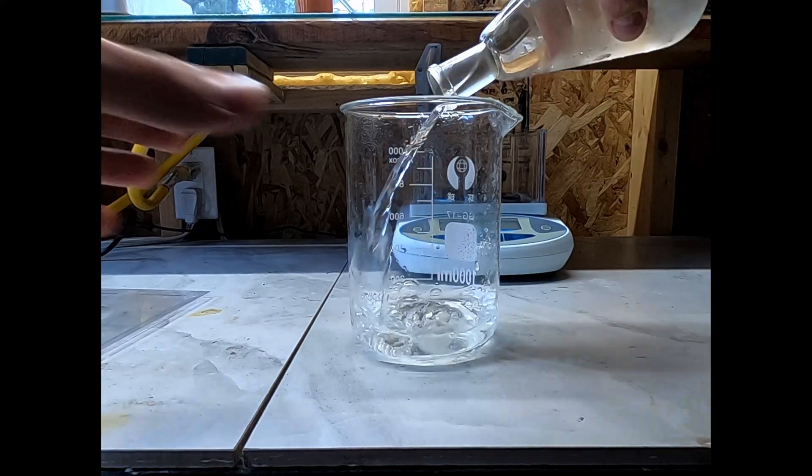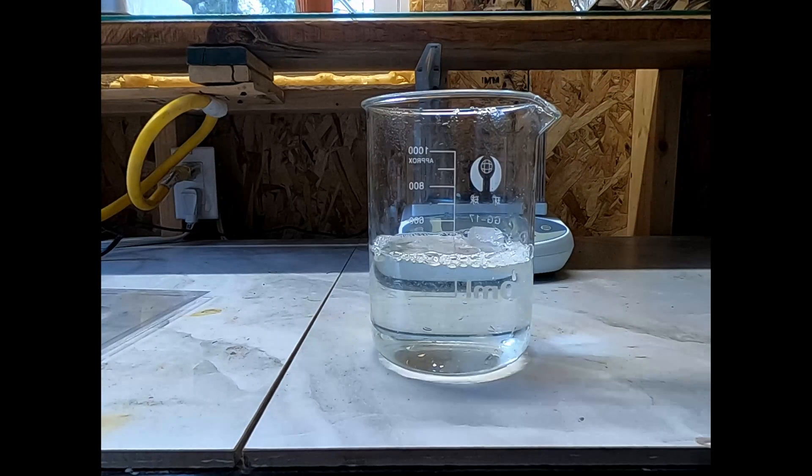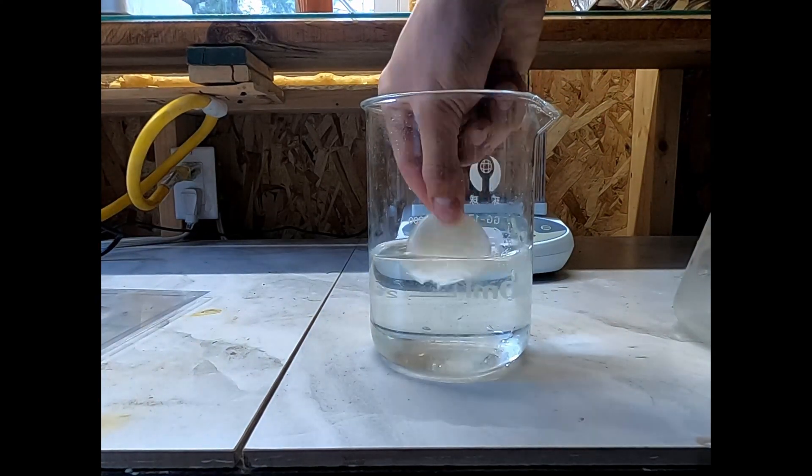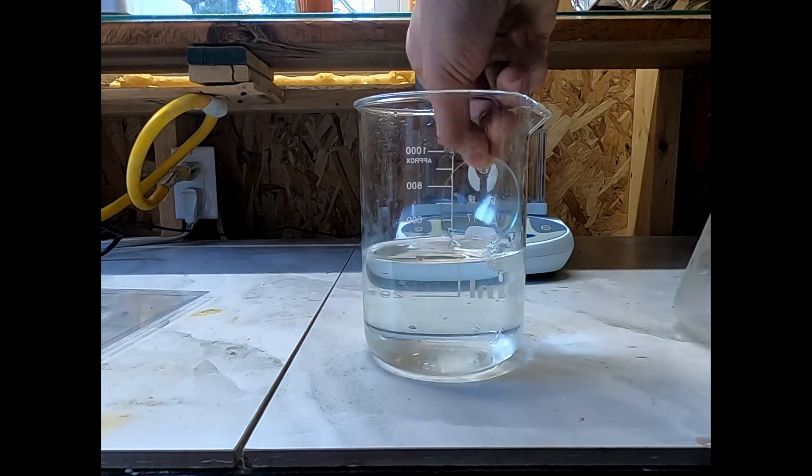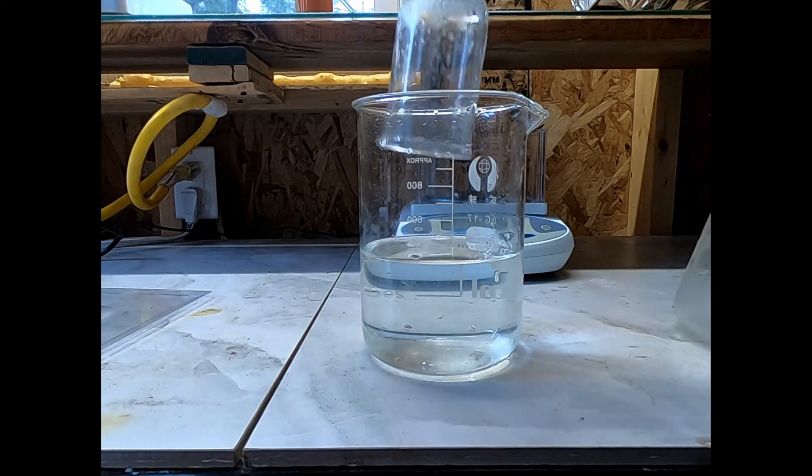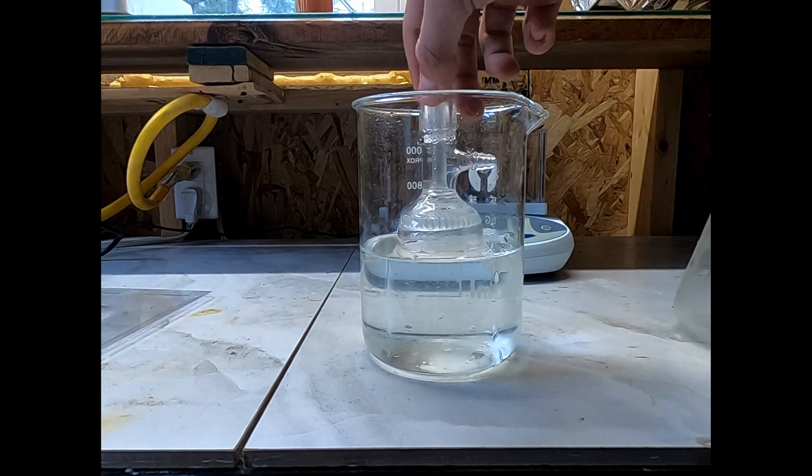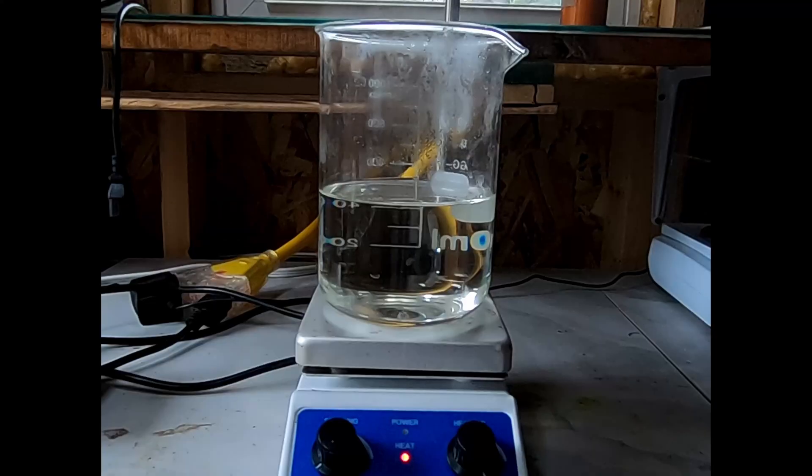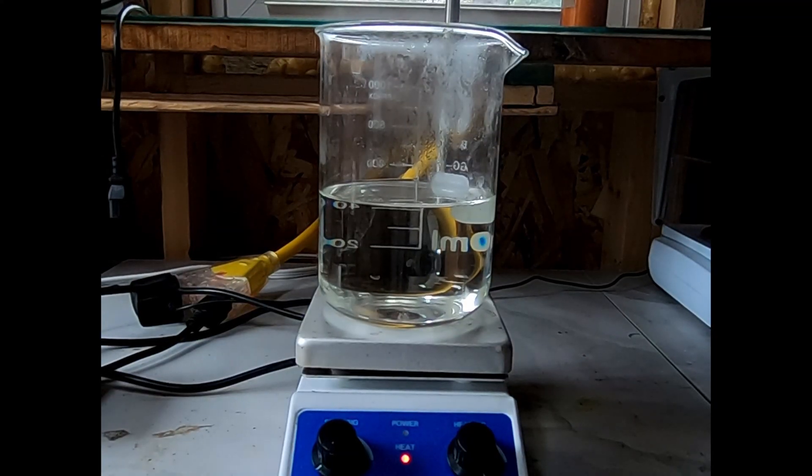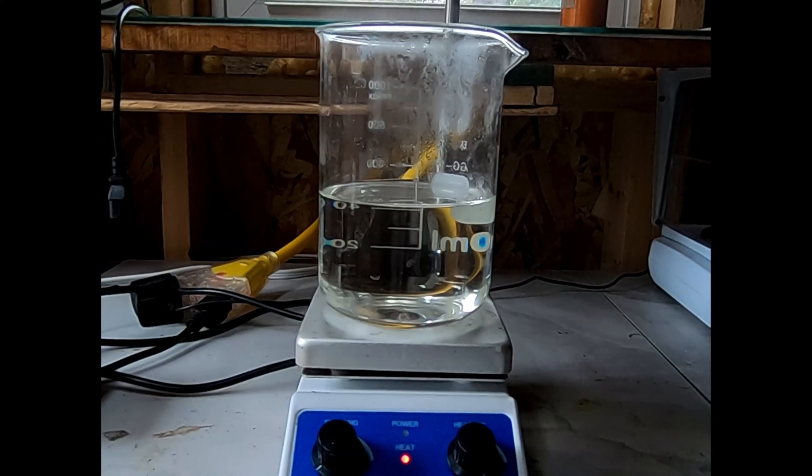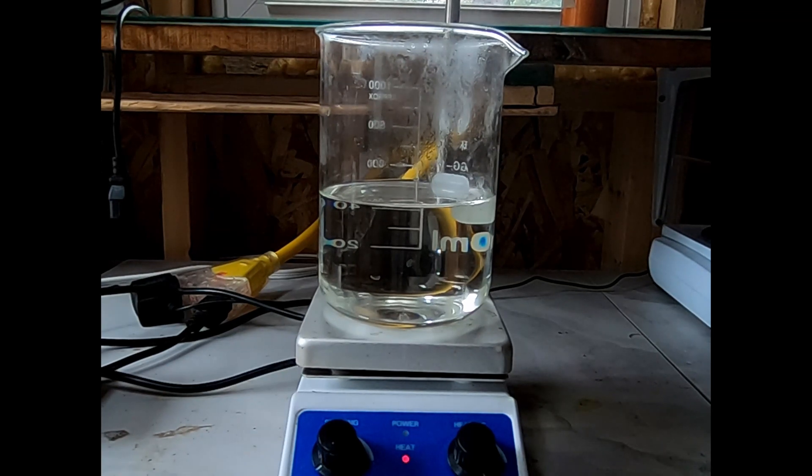I start by pouring all of the filtrate from the vacuum filtration into my large beaker. I then proceed to wash all the different filters and pieces of apparatus that I used to try and dissolve as much of the crystals as possible to improve my yield. Once I'm done preparing my solution, I place it on the hot plate and heat it up to evaporate off as much water as possible to reduce the solubility of sodium carbonate.